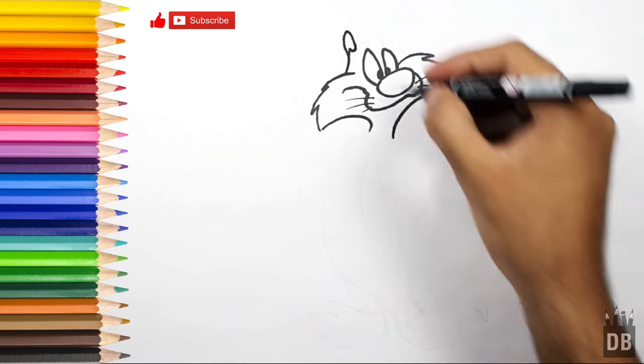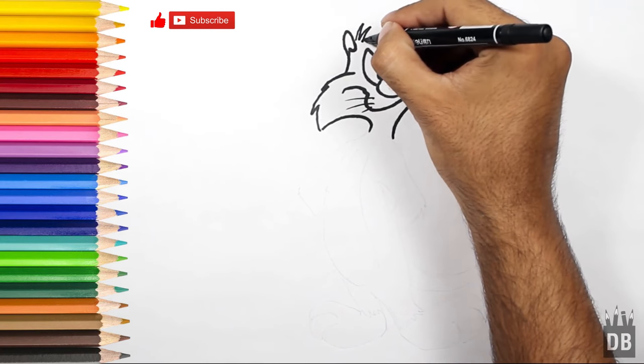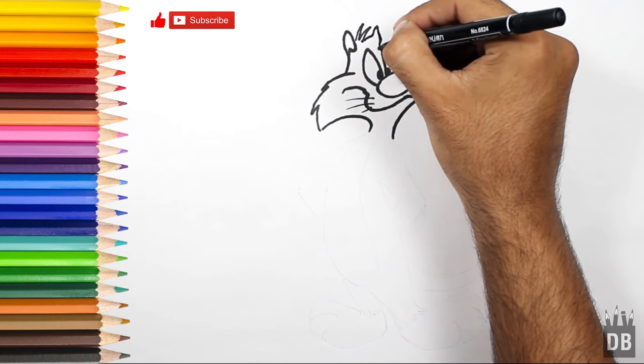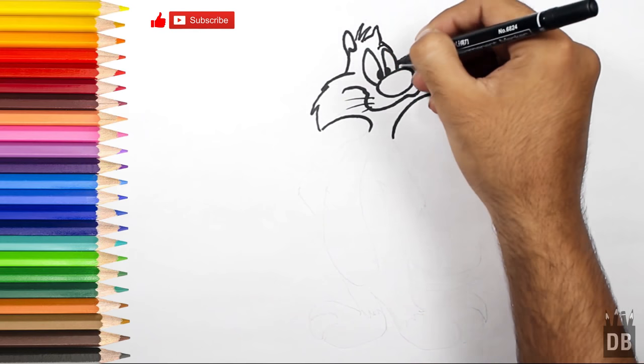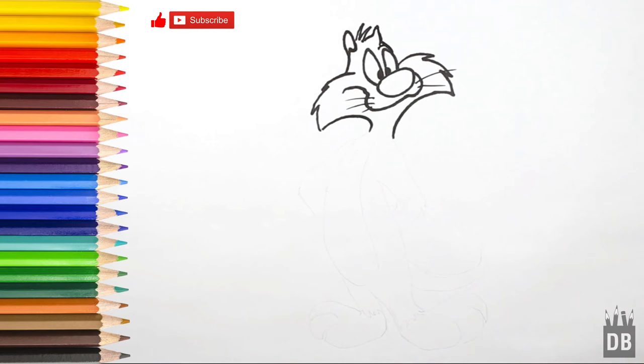Then comes his ear and his head here. The face of Sylvester is ready. Now we have to make the body.